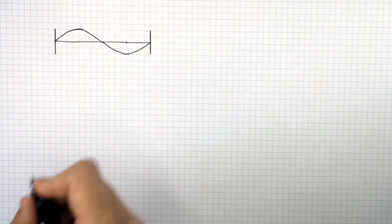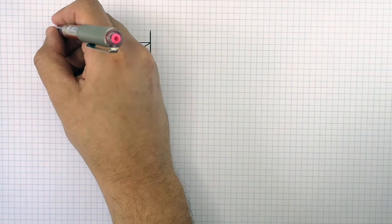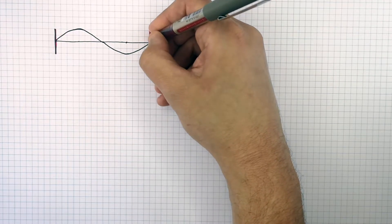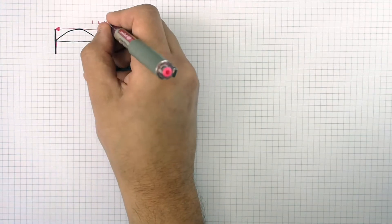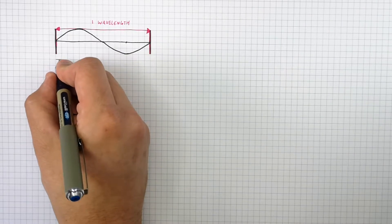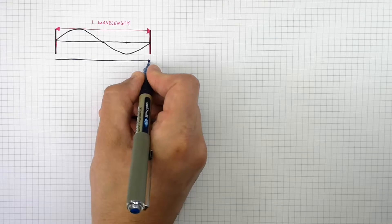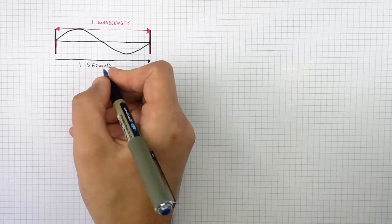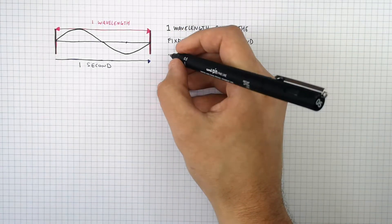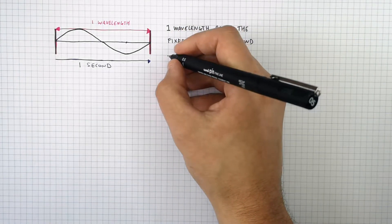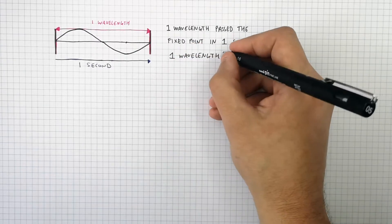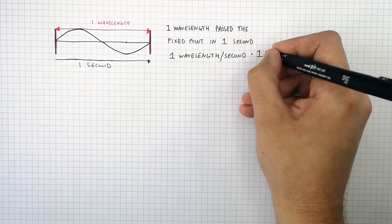I've now drawn one wavelength, going from one point on a wave to the next equivalent point of the next wave. This one wavelength will have passed the fixed point in one second. So if you've got one wavelength and it passes the fixed point in one second, it's going to be one wavelength divided by one second, which is one hertz.